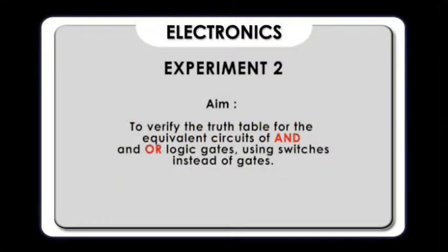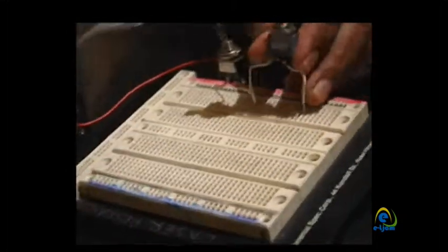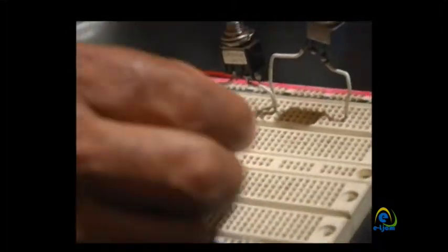Experiment two: aim to verify the truth table for the equivalent circuits of AND and OR logic gates using switches instead of gates. Set up the equivalent circuit diagram of an AND gate using switches, with the components correctly placed and switches connected in series.